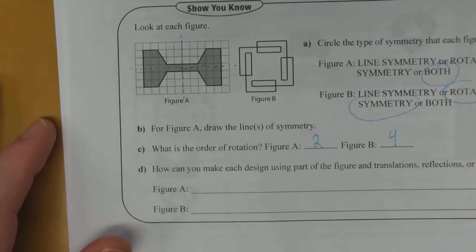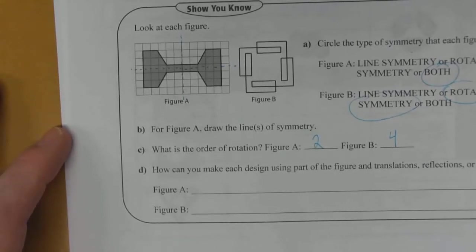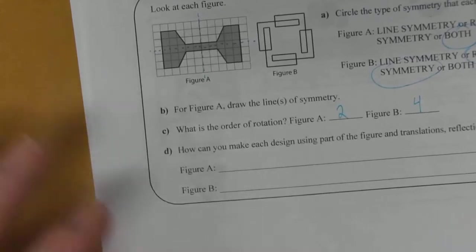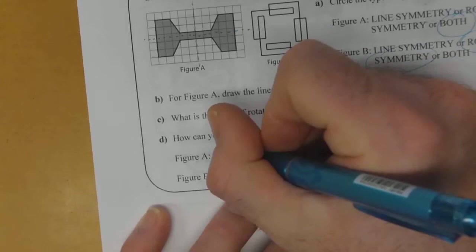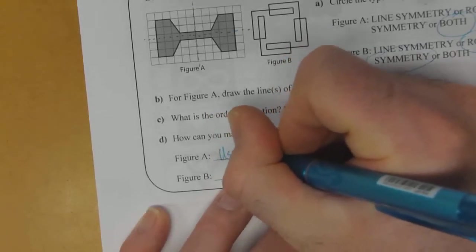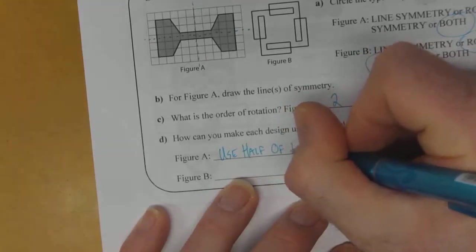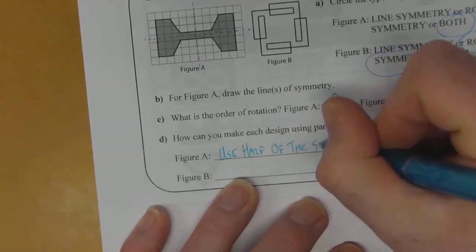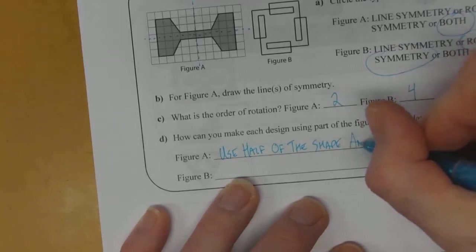Part D. How can you make each design using part of the figure and translations, reflections, or rotations? So for figure A, you could use half of the shape and reflect.